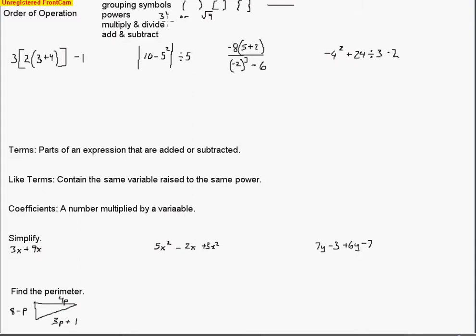When you multiply or divide, make sure you work from left to right — it has to go that way. If you don't go left to right, you're going to end up making an error. Same thing with addition and subtraction: as long as you work from left to right, you'll have fewer errors.